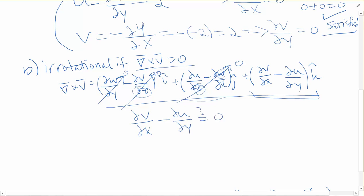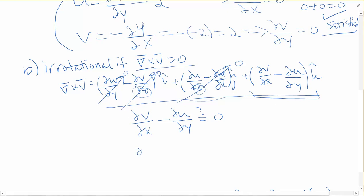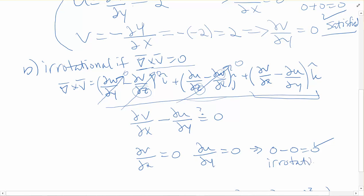We already know u and v — they were both equal to 2. So the partial of v with respect to x is 0, and the partial of u with respect to y is 0. Indeed, 0 minus 0 is 0, so the flow is irrotational. There is no rotation in this flow.